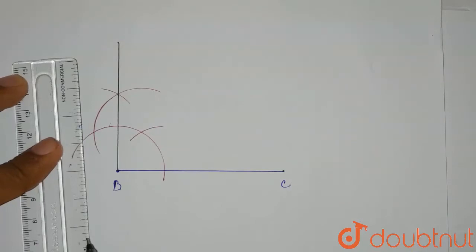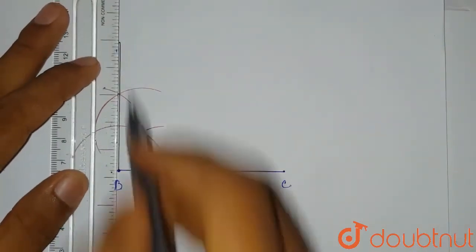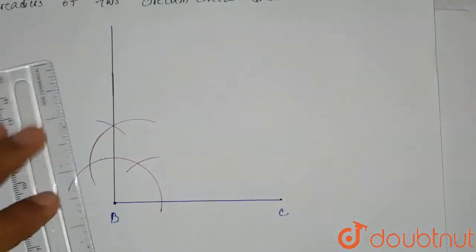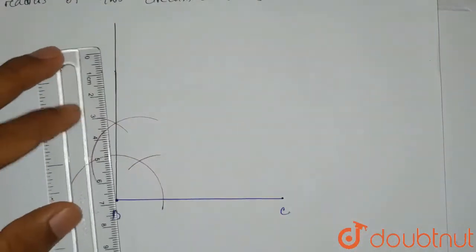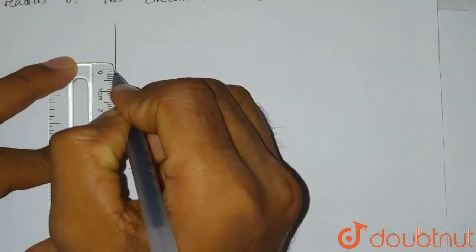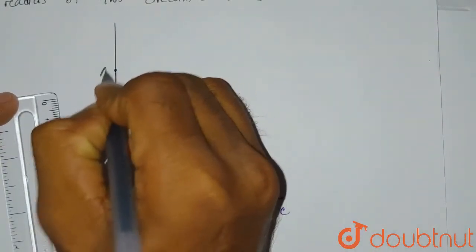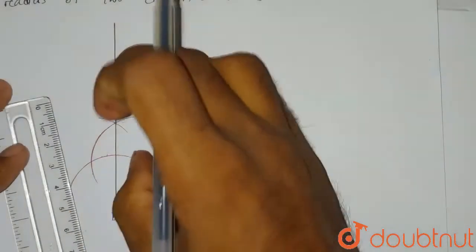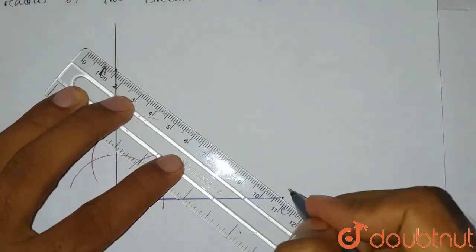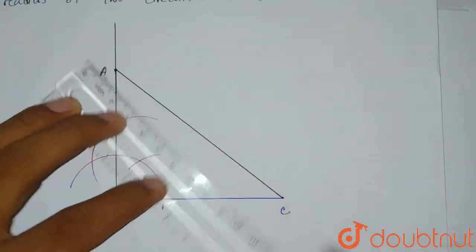AB is 6 centimeters, so let's extend this line a bit so we can measure 6 centimeters. We place zero here and the 6 centimeter mark gives us point A. This point will be our A point because AB is 6 centimeters.